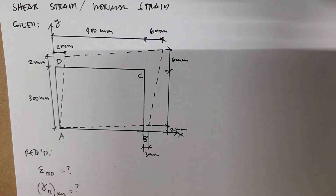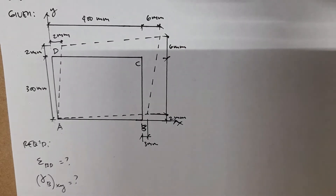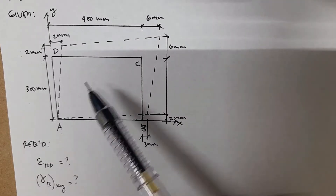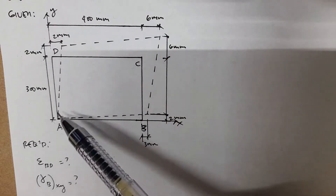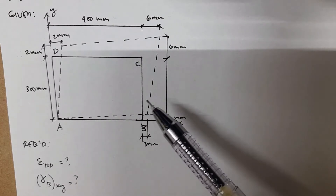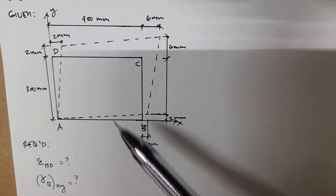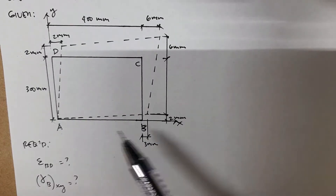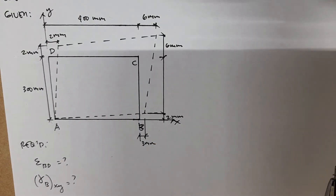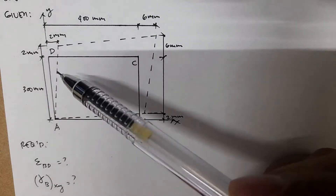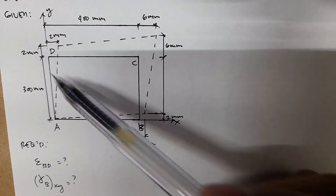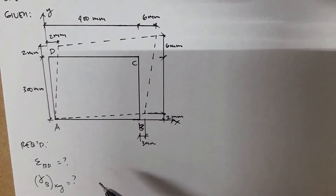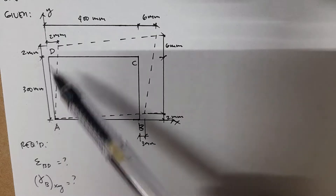In this problem we have a combination of shear strain and normal strain, and we're going to find both. We have a rectangular plate where the dashed line shows the new position of the sides. There are several displacements in both the x and y directions. We're asked to find the strain at the diagonal BD, and also the strain at point B with respect to the x and y axes.